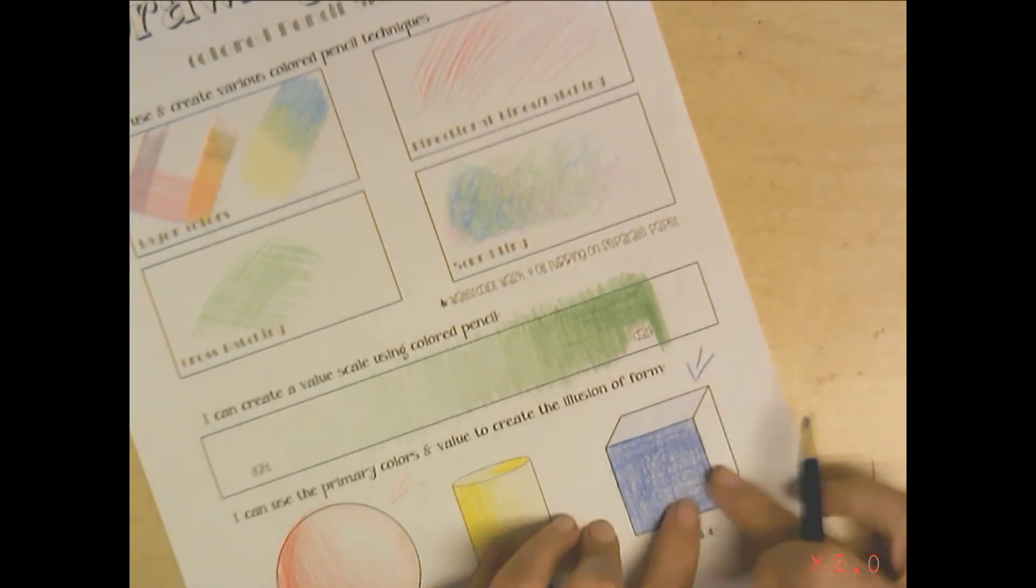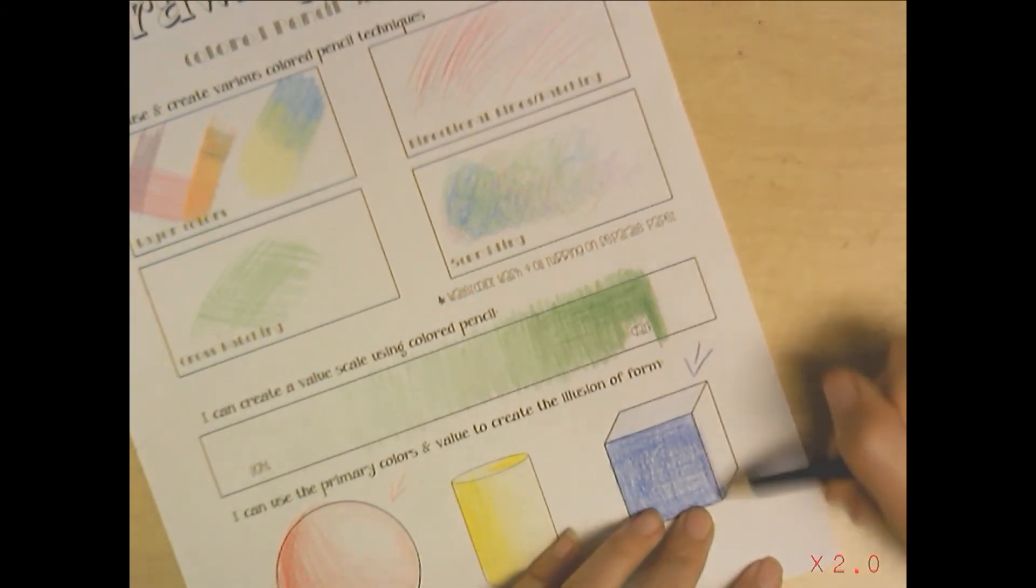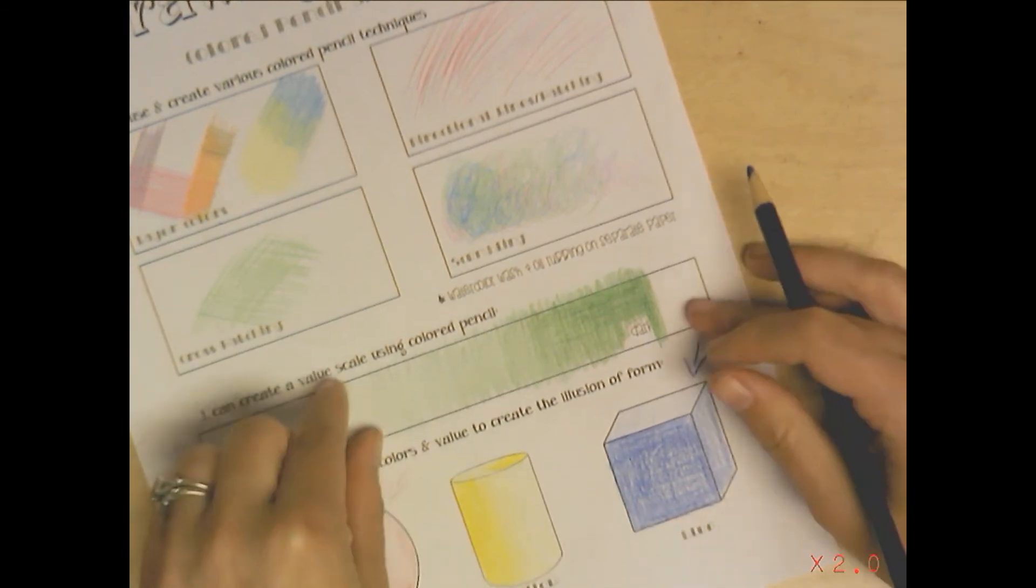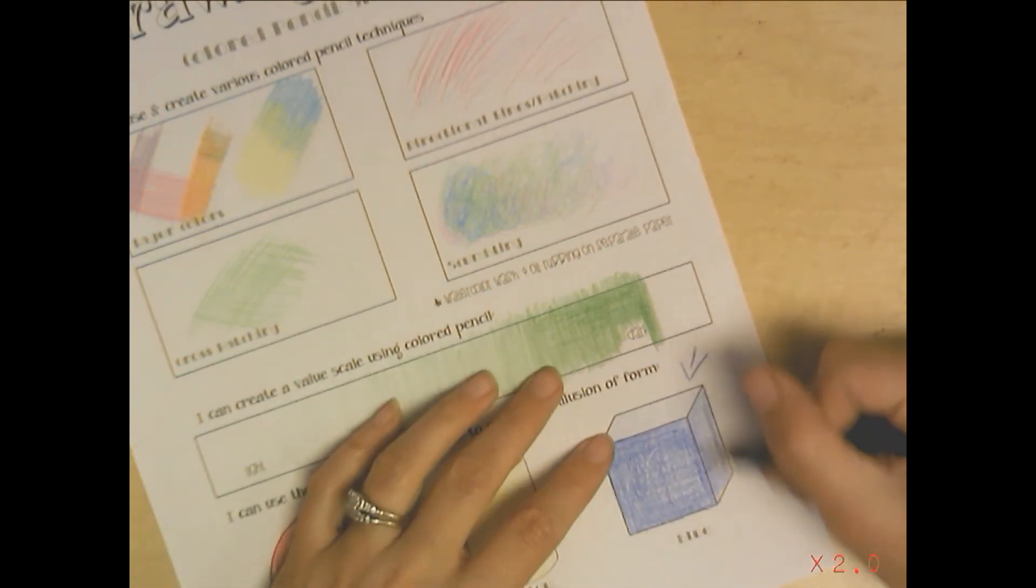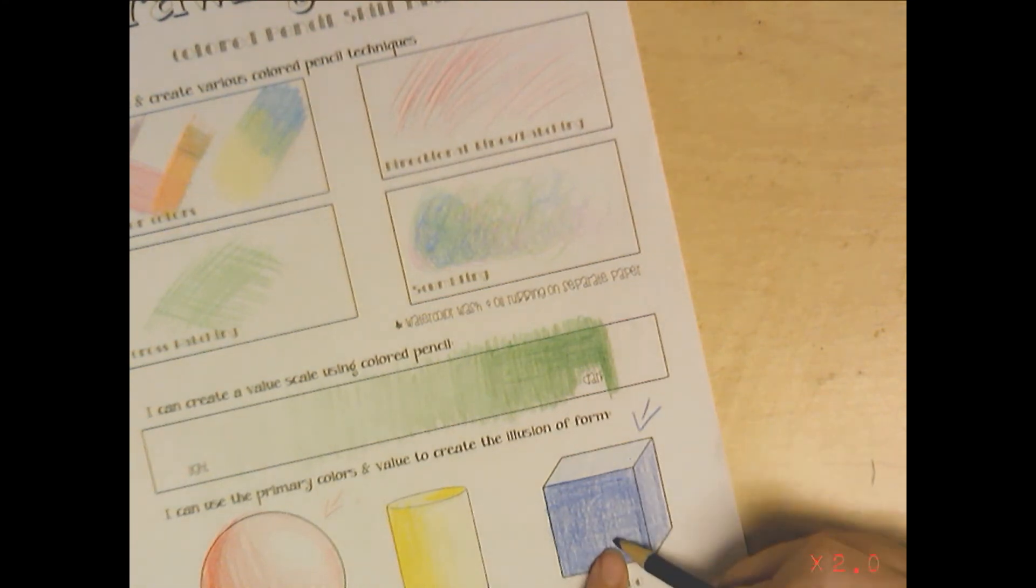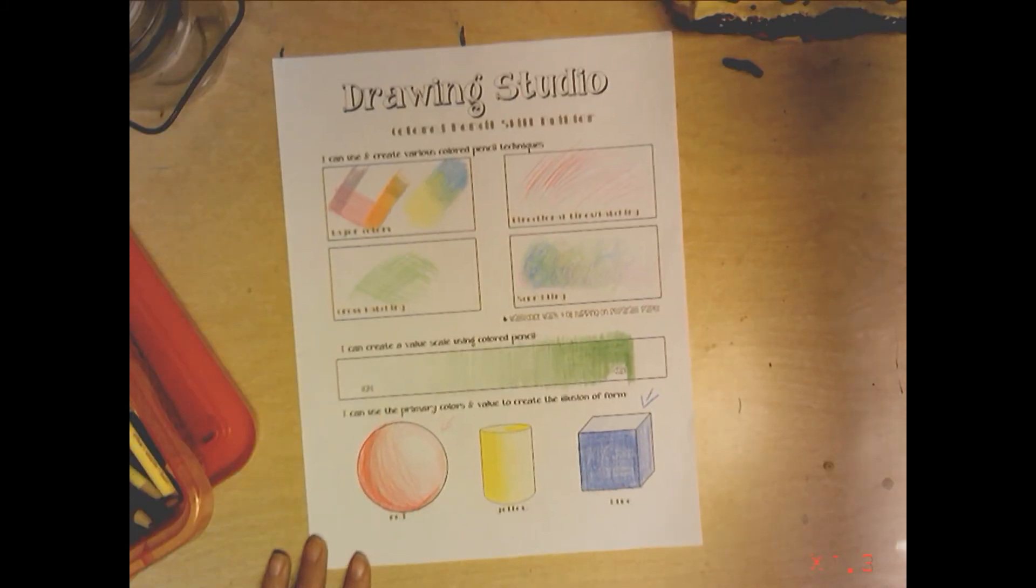Here on this plane, on this side, you want this to be sort of a medium value. This would all change if your light was coming in from the bottom, because then this would be your light value, this would be a darker value. You just want to be able to tell the difference - dark, medium, light. This is your skill builder on colored pencil.